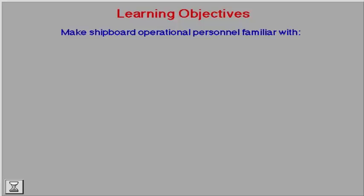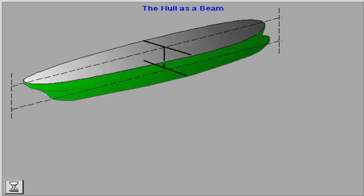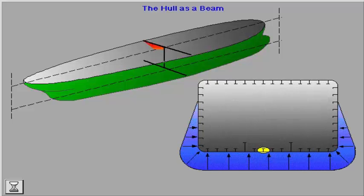The learning objectives of this section are to make shipboard operational personnel familiar with how external forces act on the hull girder, the effect of local forces applied on internal structures in critical areas. As a beam, the hull girder has to have sufficient cross-section material in the cargo area in the midship area.